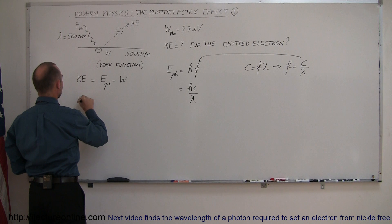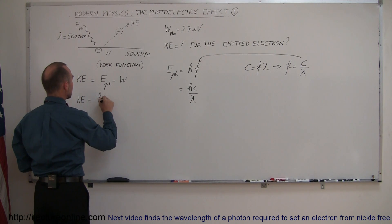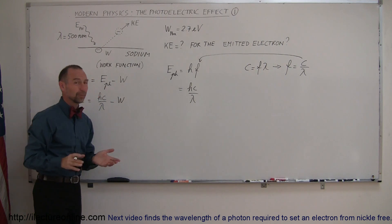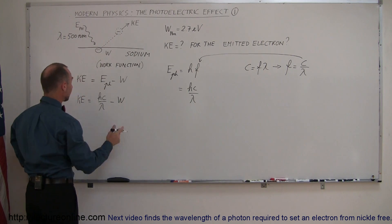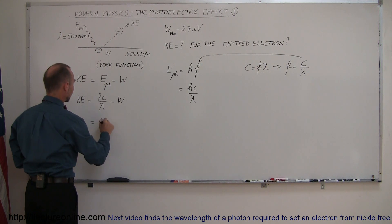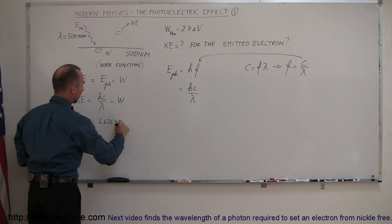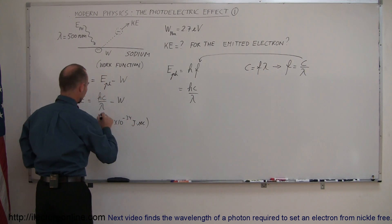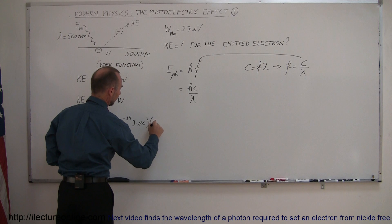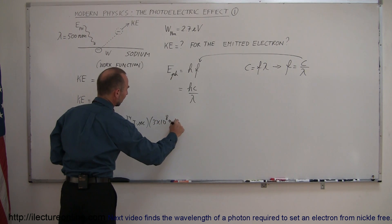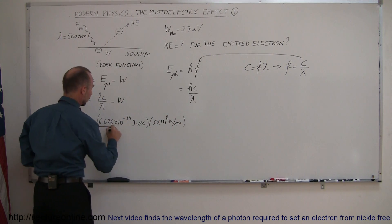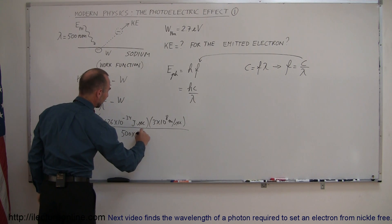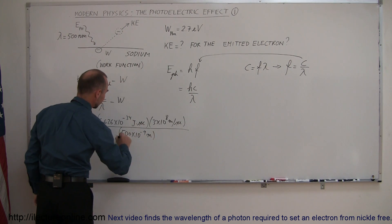So we can plug that in here. The kinetic energy is equal to hc over lambda minus the work function. Of course, the work function does depend upon what metal we're dealing with. Plugging in the numbers. This is equal to 6.626 times 10 to the minus 34, that would be joules times seconds if you want to know the units of Planck's constant, times the speed of light, 3 times 10 to the 8 meters per second. And divide the whole thing by the wavelength, which was given to be 500 nanometers. So 500 times 10 to the minus 9 meters.